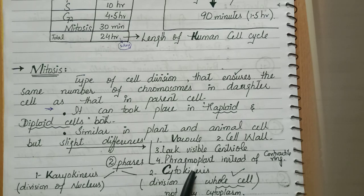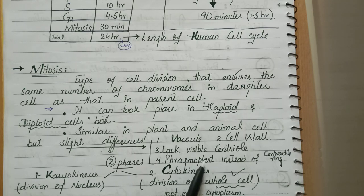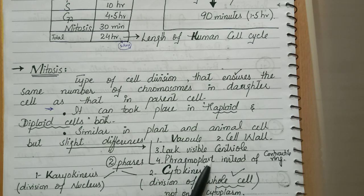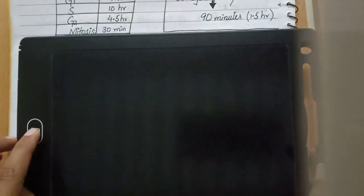Fourth difference: plants have a fragmoplast instead of a contractile ring. The fragmoplast is a structure formed during cell division in plant cells. It is formed from vesicles of the Golgi apparatus or Golgi complex. So during division of the plant cell, only the fragmoplast forms — not a cleavage furrow.